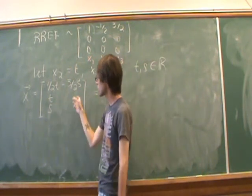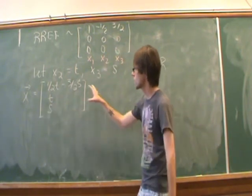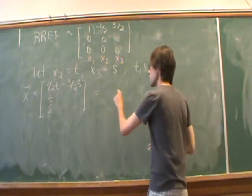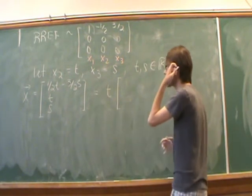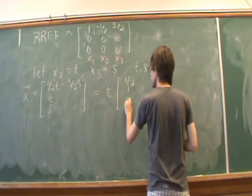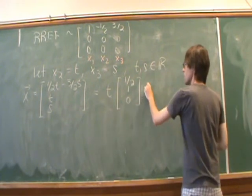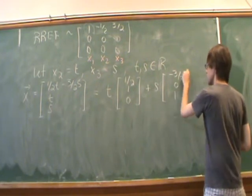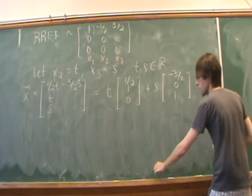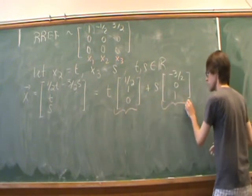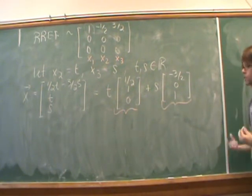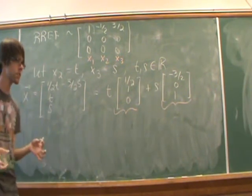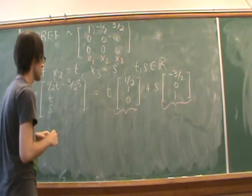Our general solution for the null space consists of all vectors of this particular form. Breaking it up into a piece containing t — which is (1/2, 1, 0) — and a piece containing s — which is (−3/2, 0, 1) — these are going to be our basis vectors. These two vectors form the basis for our null space and also form the basis for the kernel of the linear transformation T.